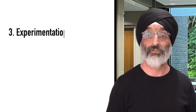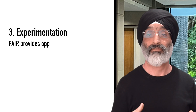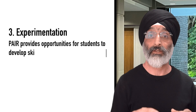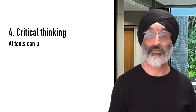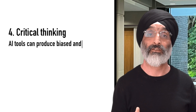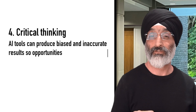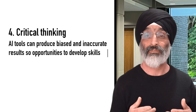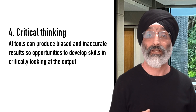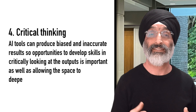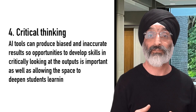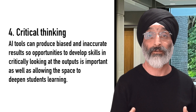The third skill is Experimentation. PEAR provides opportunities for students to develop skills in the use of these tools. The fourth skill is Critical Thinking. AI tools can produce biased and inaccurate results, so opportunities to develop skills in critically looking at the outputs is important, as well as allowing space to deepen students' learning.